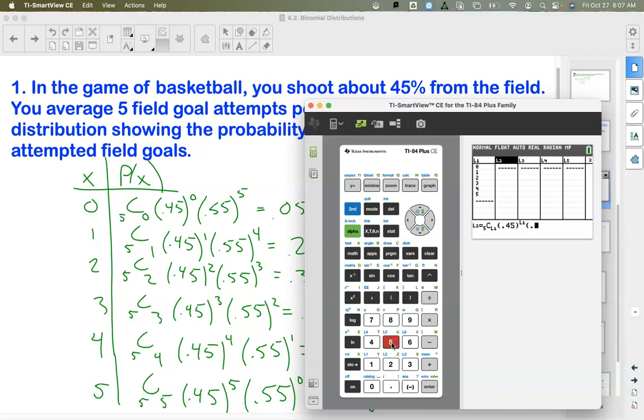Times our probability of success, 0.45, to the, well, what is this power in each of the rows in our probability distribution? It's the number of successes, which is L1 again. Times 0.55 to these, so that's the probability of failure. How many failures do we have? Well, when we had three successes, we had two failures. How did we get that two? Well, it was five minus three. It's five minus the number of successes that we have in list one.